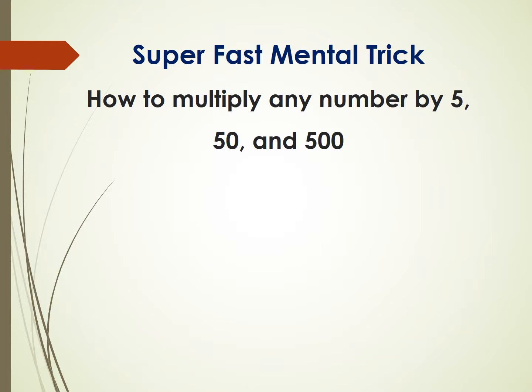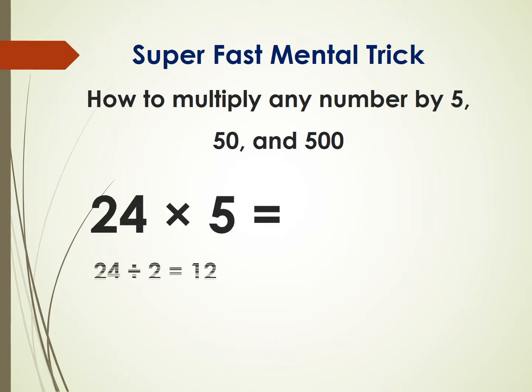Hello guys, my name is Reza. I'm a math teacher and in this video I'm going to show you how to multiply any number by 5, 50, or 500 fast. Take a look at this example: 24 times 5. To solve this one fast, you just need to divide 24 by 2, then you get 12, and then just write 12 and put one zero after it. So the answer is 120.